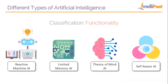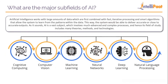Those are the different types of artificial intelligence. Now let's discuss the major subfields of AI in which you can specialize. AI works with large amounts of data combined with fast processing and smart algorithms that allow the system to learn from patterns. AI is a vast subject involving advanced and complex processes, so its field of study includes many theories, methods, and technologies.